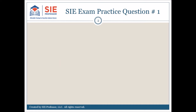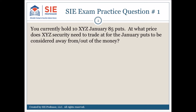SIE exam practice question number 1. You currently hold 10 XYZ January 85 puts. At what price does XYZ security need to trade at for the January puts to be considered away from or out of the money? A) $10, B) $80, C) $85, or D) $88. Pause here to consider the choices and mark your answer.